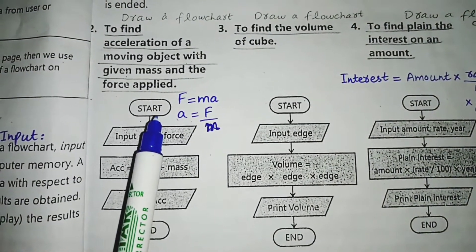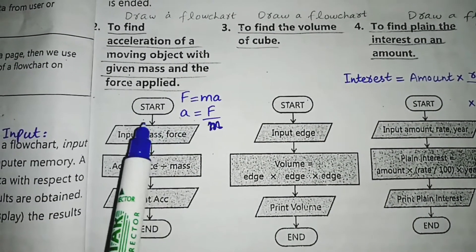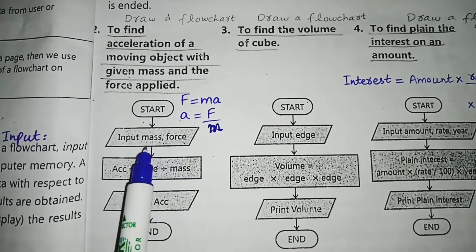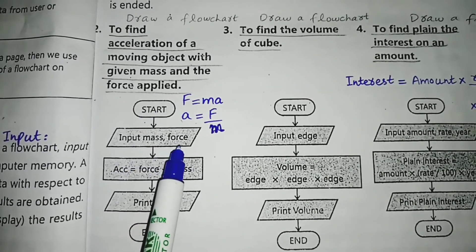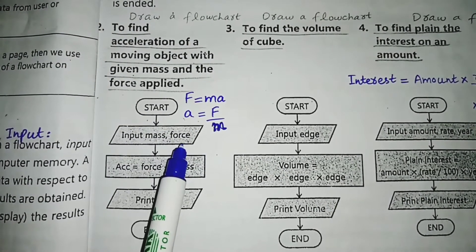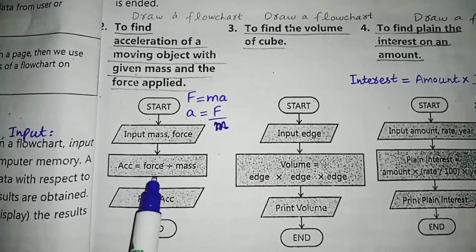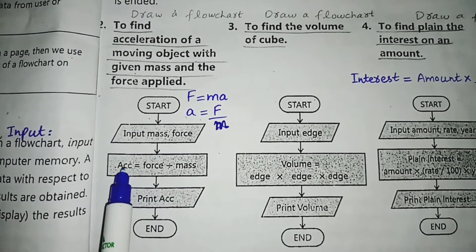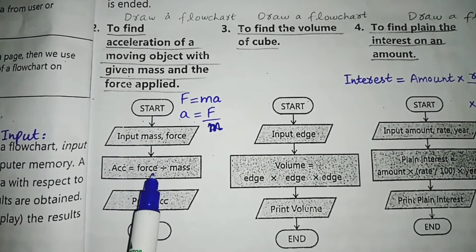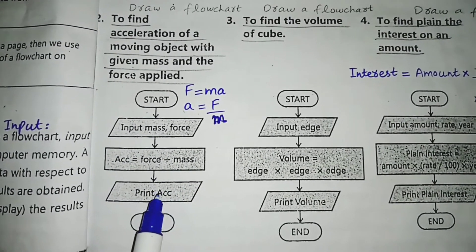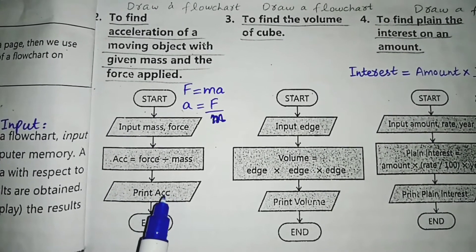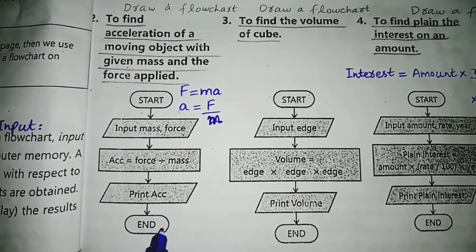The flowchart follows the same structure as the previous one. There is an oval start symbol, then a parallelogram for input — we enter the mass and force values. After that, the rectangle shape shows the processing: Acceleration = Force / Mass. Then there is another parallelogram for output — we print the acceleration — and this is the end of the flowchart.